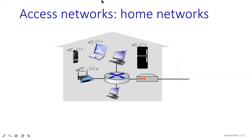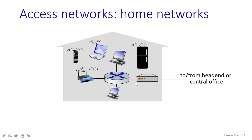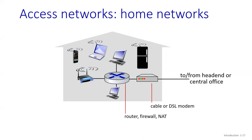Now you can see the next one as your home network. In our home network, all these devices have been connected. The first thing you can see is routers, and this is your modem. Here you can see the connections of your headend or central office — you are going to connect from here to there. This is your DSL modem. And this is your router, or you can say firewall, or NAT. This is your wired Ethernet, which has a downstream transmission rate of up to 1 Gbps, and it is connected with the router directly.